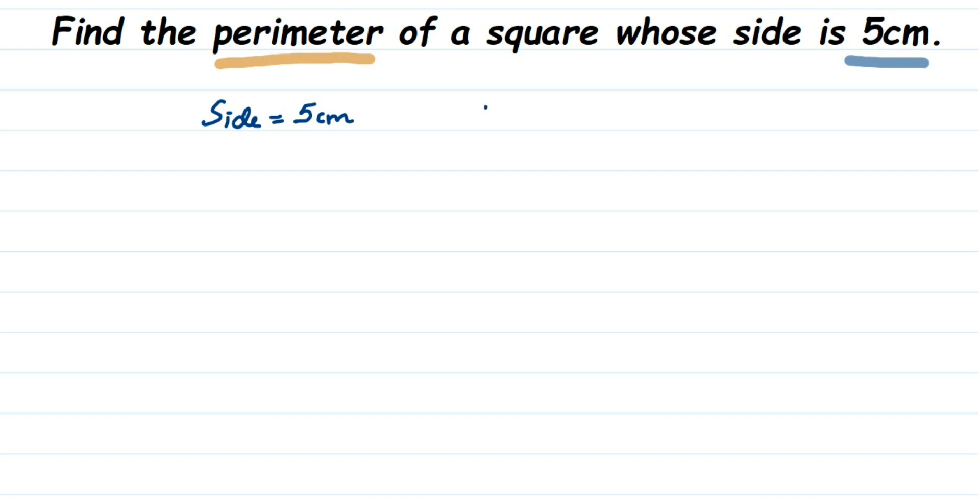What is the formula for perimeter of a square? Perimeter is when you add all the sides of the square. There are four sides, right? So the formula will be perimeter equals...